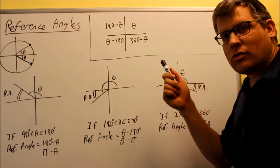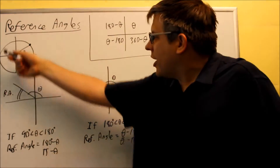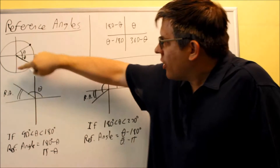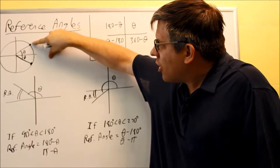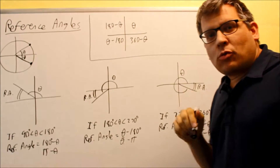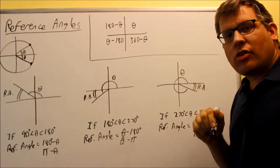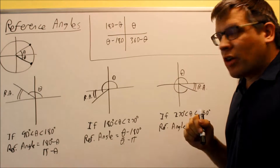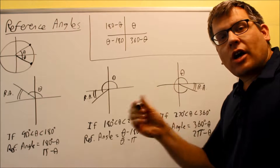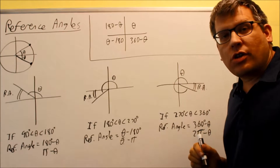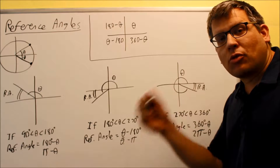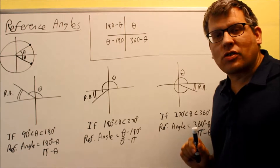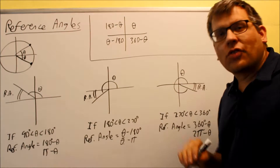Now we're going to talk about reference angles. Let me define what a reference angle is. If we look at this drawing of the unit circle, we have an angle theta drawn in a quadrant. In a previous video, I showed you the table of values with special angles between 0 and 90. Our table is limited — it only goes up to 90 degrees. A reference angle is going to be a way for us to find the exact value in different quadrants.